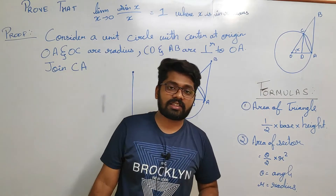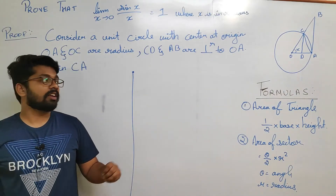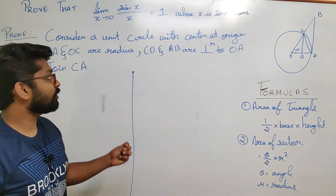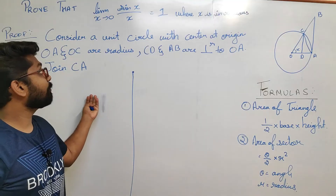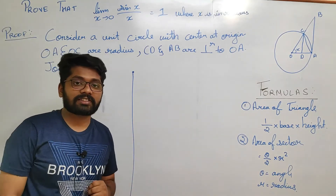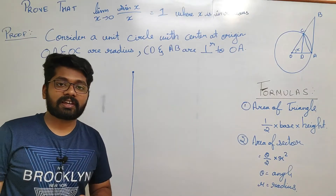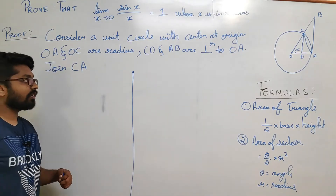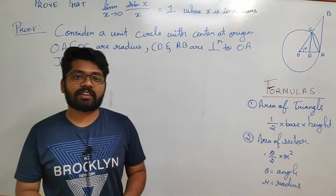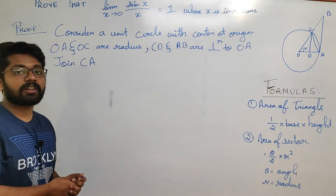Here x is in radians. Now let's proceed to the further part — we are going to prove the theorem that the limit as x tending to 0 of sin x over x equals 1. We will now understand how the next part comes.